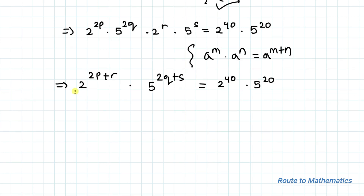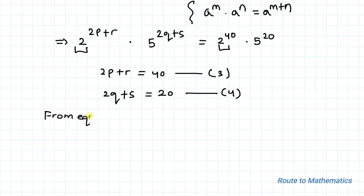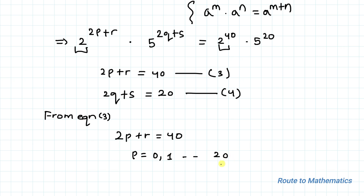Now comparing the same base powers, we can write: 2p + r = 40 — let's take it as equation 3, and 2q + s = 20 — let's take it as equation 4. From equation 3, since the value of p can only range from 0 to 20 (it cannot exceed 20), the number of solutions of equation 3 is 21.